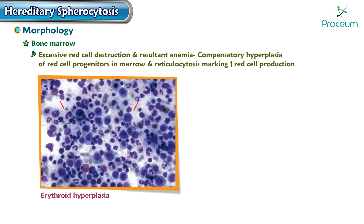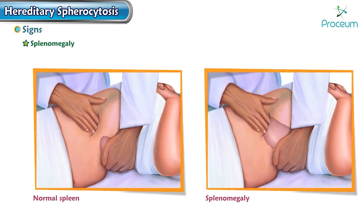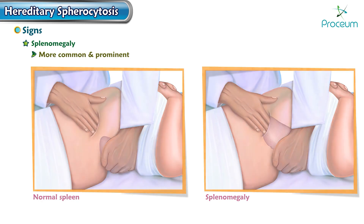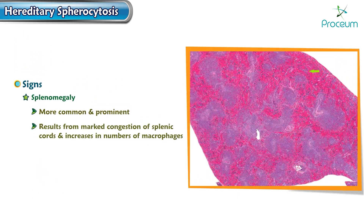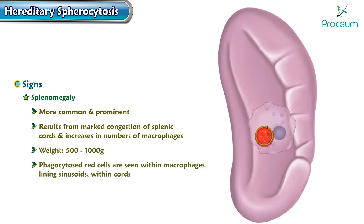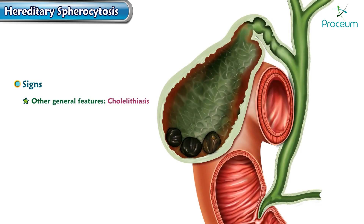Splenomegaly, which is more common and prominent in hereditary spherocytosis than in other hemolytic anemias, results from marked congestion of the splenic cords and increases in the number of macrophages. The weight of the spleen in these patients is about half to one kilogram. Phagocytosed red blood cells are seen within macrophages lining the sinusoids and in particular within the cords.